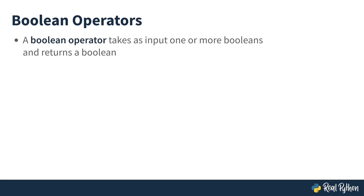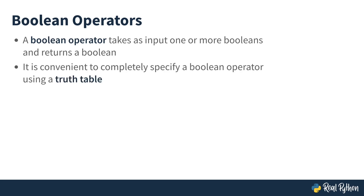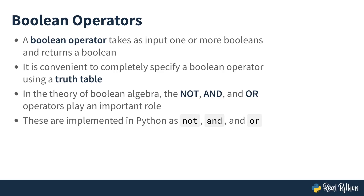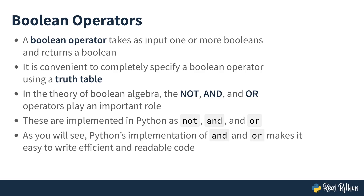A Boolean operator takes as input one or more Booleans and returns a Boolean. It's convenient to completely specify a Boolean operator using what's called the truth table, and we'll do so for the three Boolean operators we'll focus on. In the mathematical theory of Boolean algebra, the three operators not, and, and or play an important role because any Boolean operator can be written as a function of these three. These three operators are implemented in Python as not, and, and or, all lowercase. Python's implementation of and and or makes it easy to write efficient and readable code.